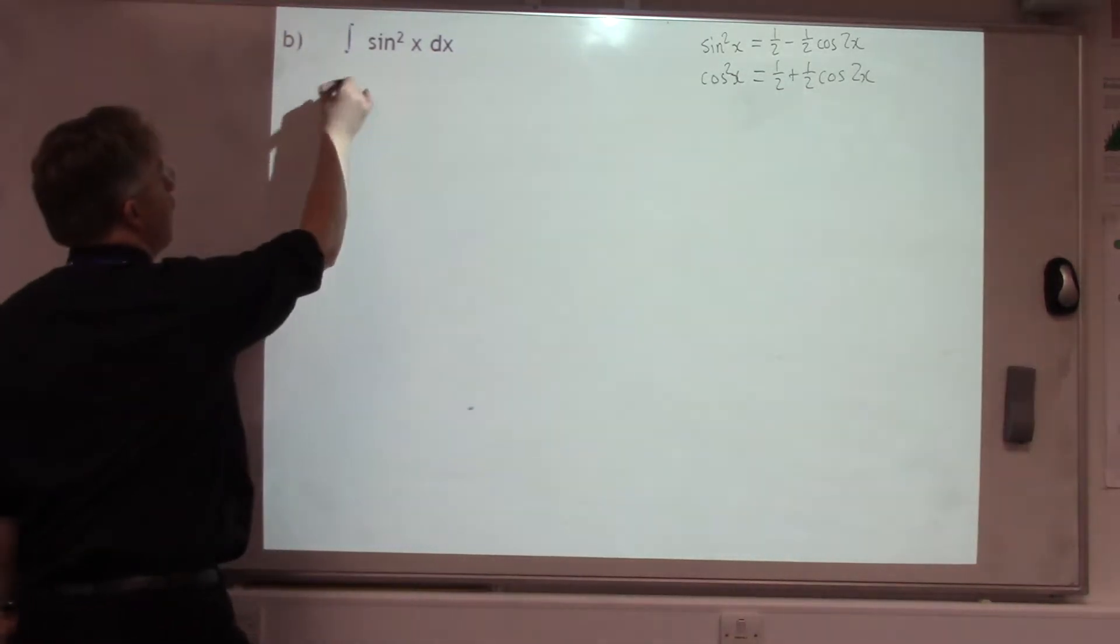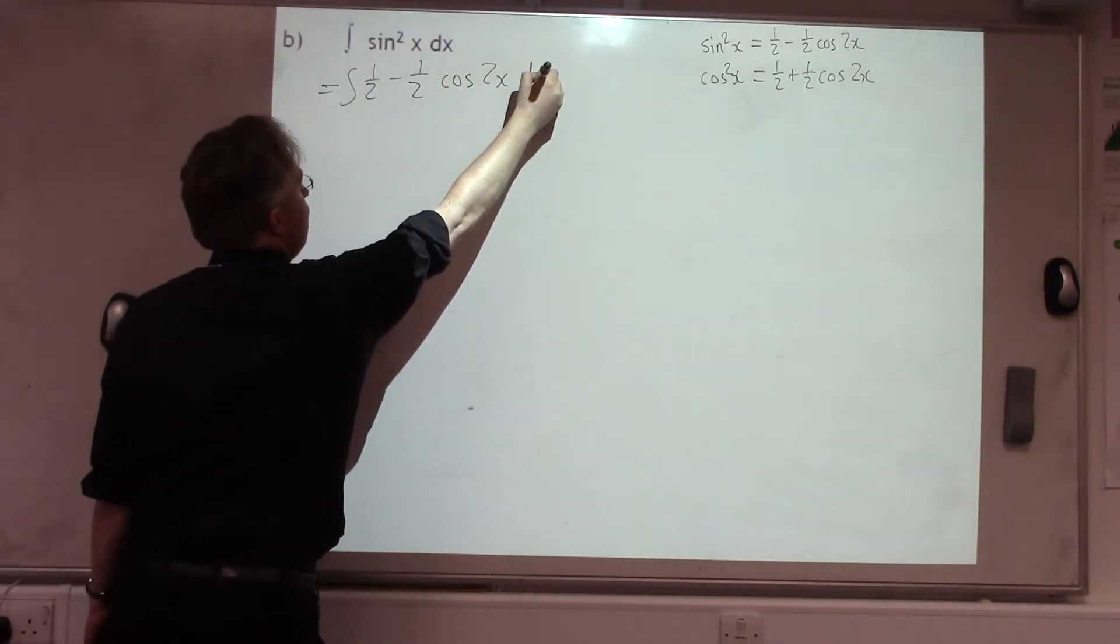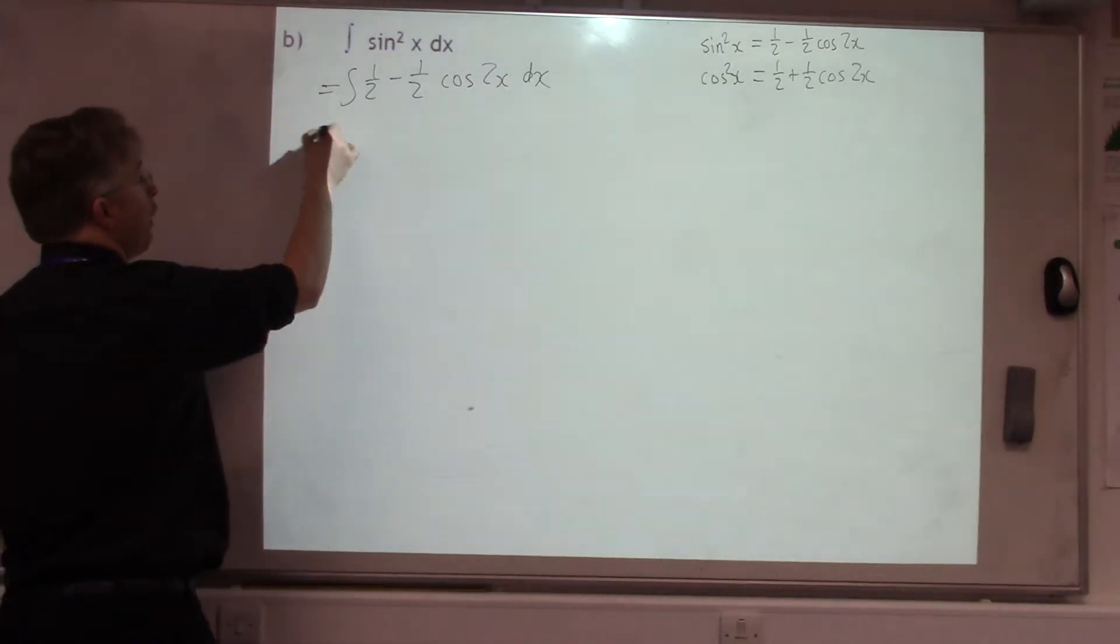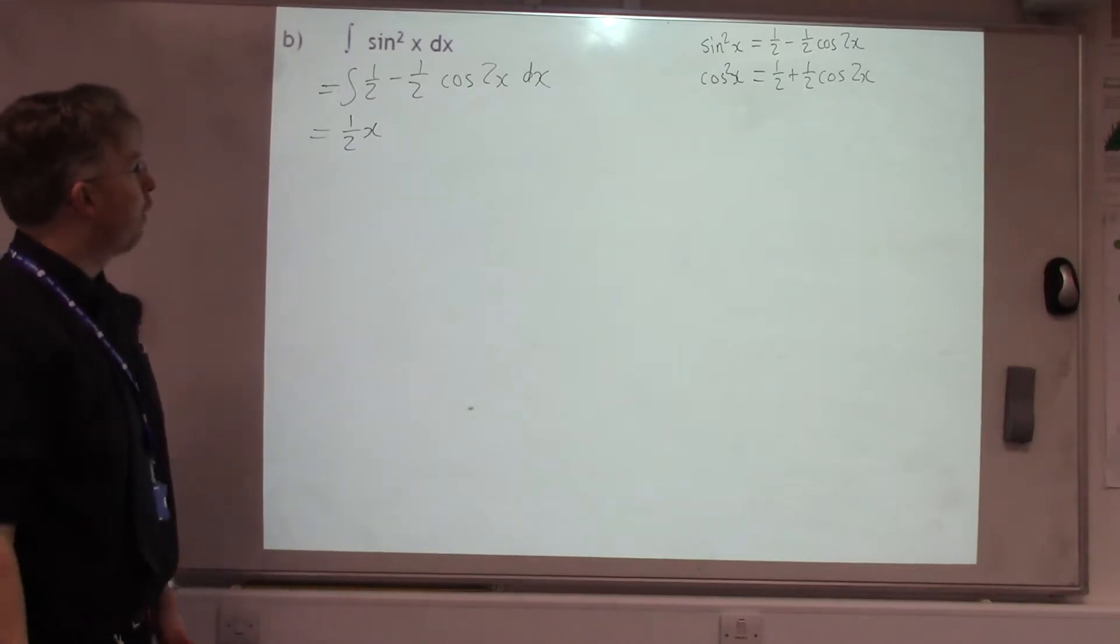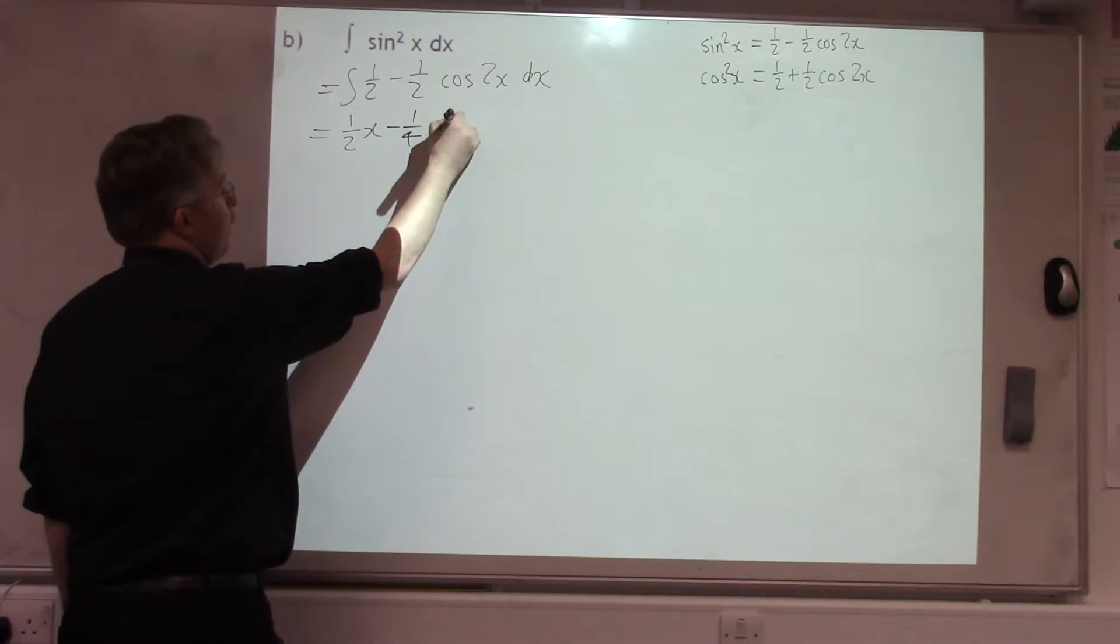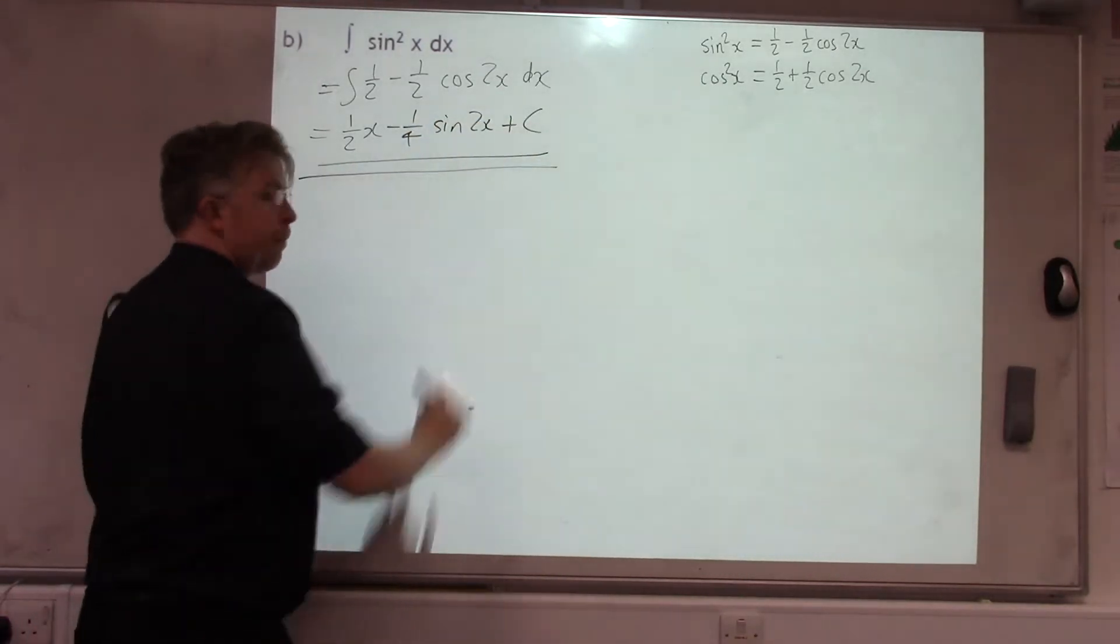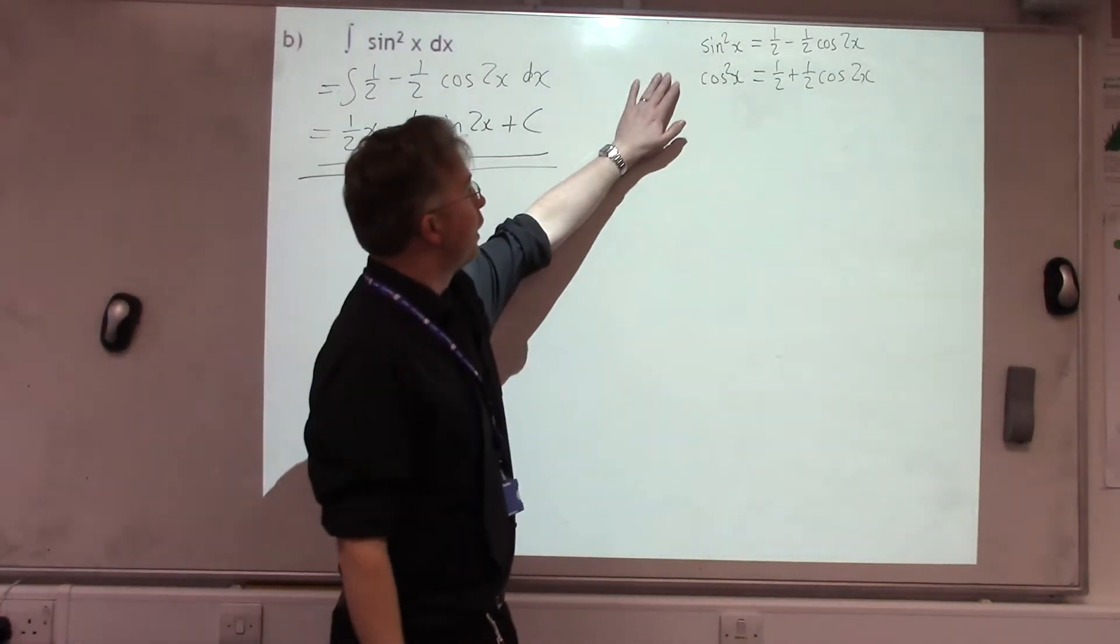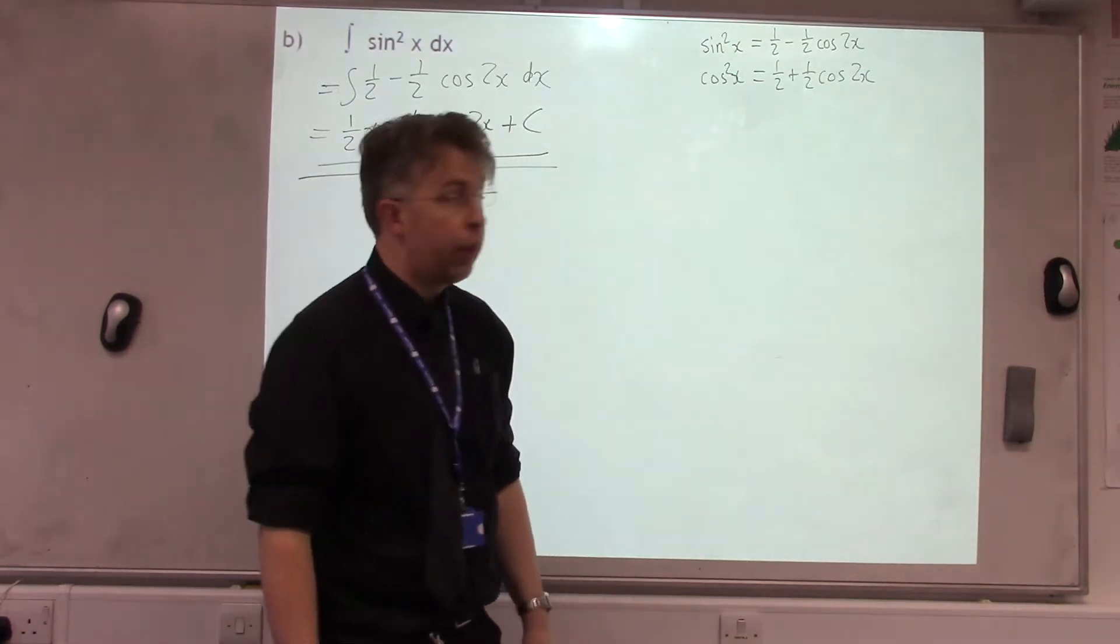So, sin²x is the integral of 1/2 - 1/2 cos 2x, and then those terms we can integrate easily term by term. So, a half integrates to 1/2 x. Half cos 2x, well, cos tends to sin, and we divide by the two. So, -1/4 sin 2x, plus c. So, again, it's about picking the right identity. So, for the sin squared for this one, and then a very, very similar example would be the cos squared one.